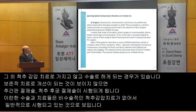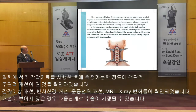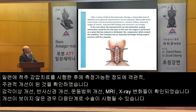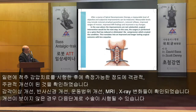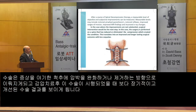Surgery. Discectomies, laminectomies, and fusions are performed when conservative therapies provide no relief. These procedures and their mixed outcomes are typically performed in the absence of non-surgical spinal decompression therapy. After a course of spinal decompression therapy, measurable objective and subjective improvements can be measured, including restored pinwheel paresthesias, restored reflexes, improved ranges of motion, improved MRI findings, and improved X-ray changes. In cases where improvements are not substantial, surgical intervention would be the next step, performed on a spine that has reduced or eliminated the compression — translating to improved and longer-lasting surgical outcomes with less sequelae.